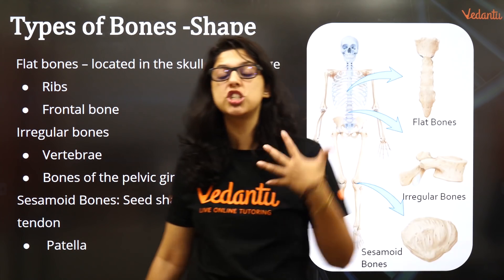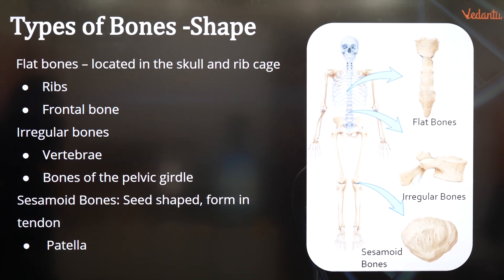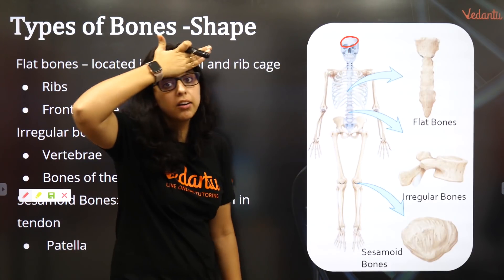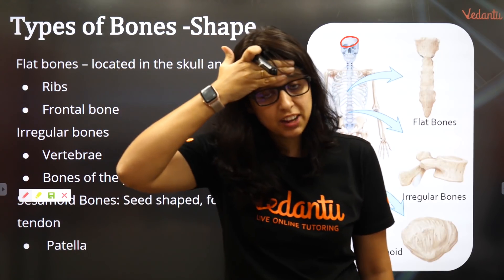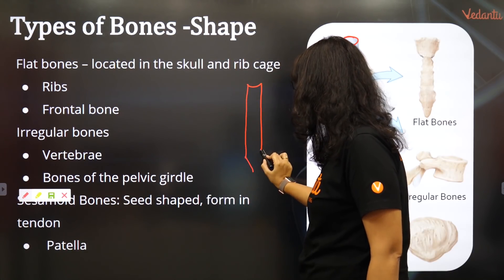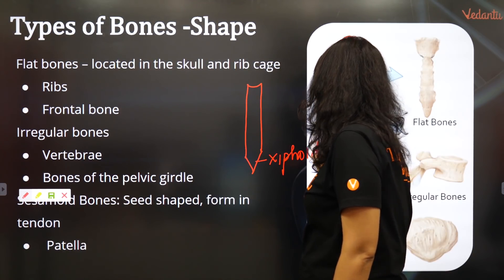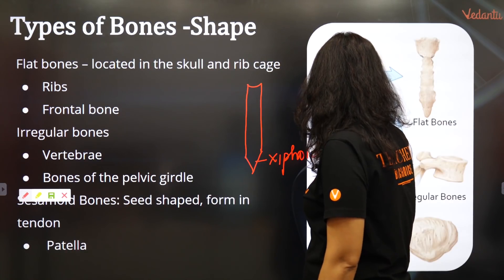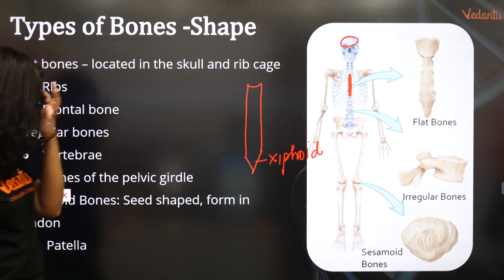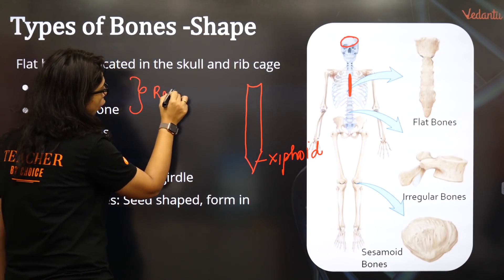Moving ahead — flat bones. So if you look at the skull and the rib cage, they are flat bones. The frontal bone is very flat, and the ribs, even the sternum. The end point of the sternum is referred to as the xiphoid process. The sternum is also a flat bone. Obviously, the ribs are again flat bones. Flat bones also have red bone marrow.